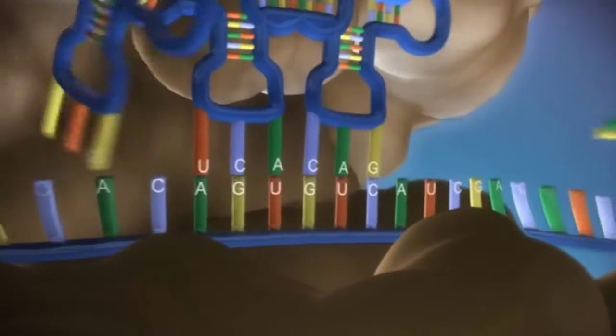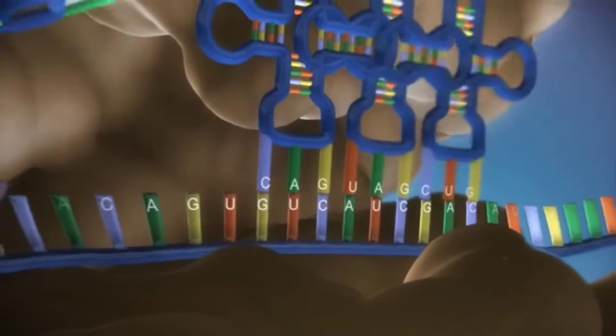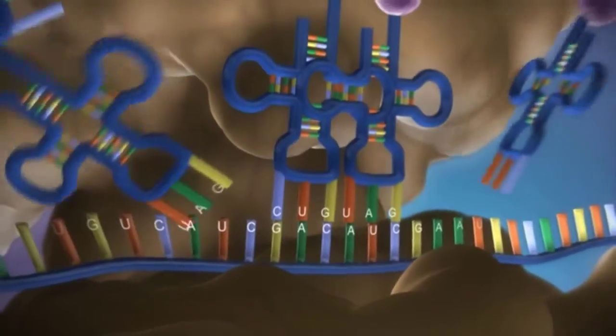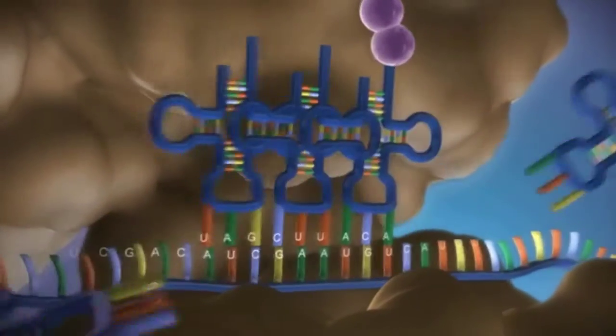The messenger RNA is read three bases at a time. As each triplet is read, a transfer RNA delivers the corresponding amino acid.